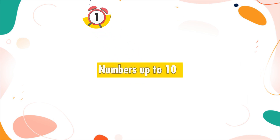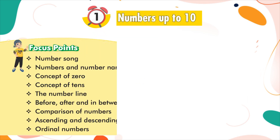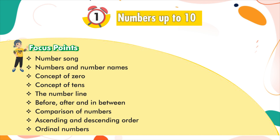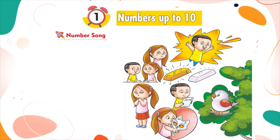Chapter 1: Numbers up to 10. Focus points: Number song, numbers and number names, concept of zero, concept of tens, the number line, before and after and in between, comparison of numbers, ascending and descending order, ordinal numbers.